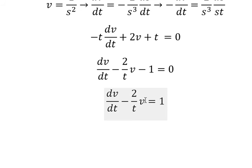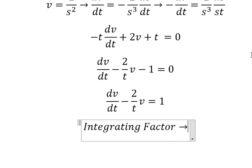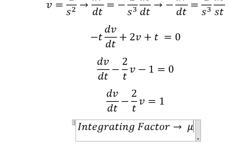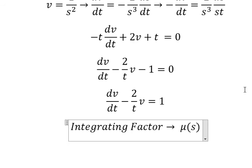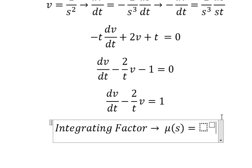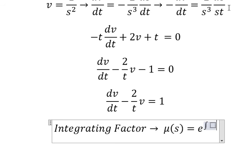So we have v and the first derivative of v. We can use the integrating factor. So I will have mu h equal to e to the power of the integrating factor.